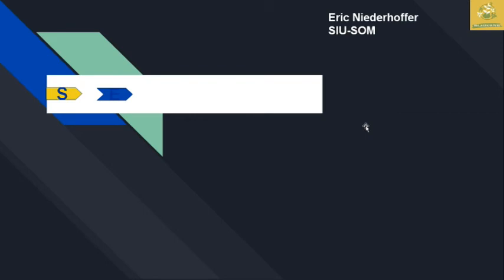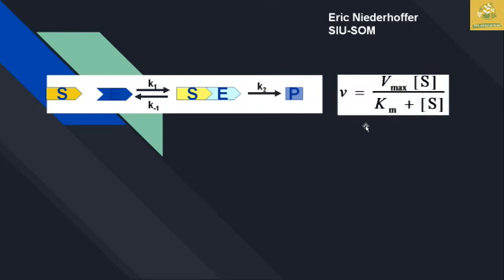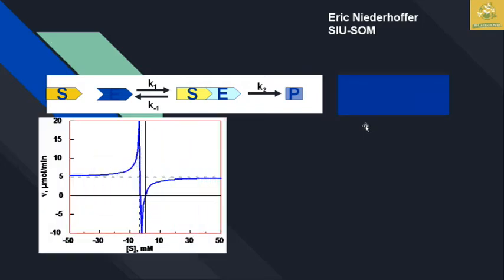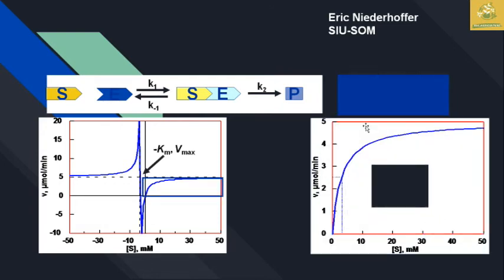Now we are going to see the Briggs-Haldane model, where substrate plus enzyme forms an intermediate enzyme-substrate complex which gives the product. The velocity equation is V = Vmax·[S] / (Km + [S]). In the graph, Km versus Vmax is shown and the half-maximum velocity is 0.5 Vmax.